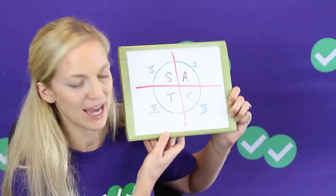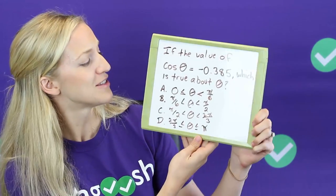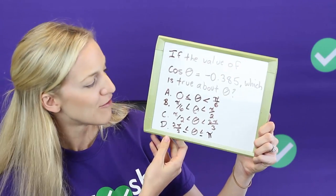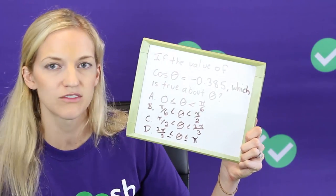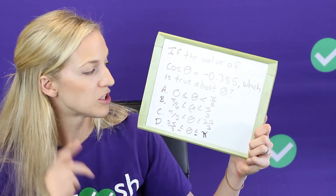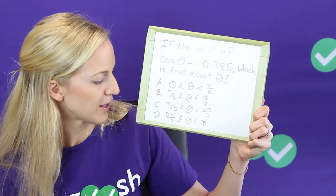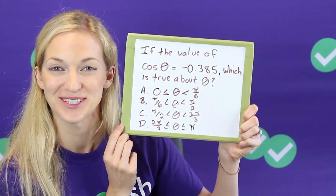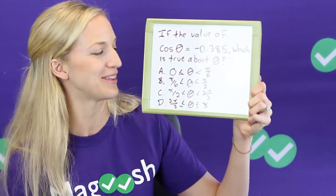Now let's get to the type of test question where this becomes important and this is a really common ACT test prep question, which is why I spent all this time getting to this point. So if we saw a question like this: if the value of cosine theta equals negative 0.385, which of the following is true about theta? I only have four answer choices here not five because I ran out of room but you get the idea.